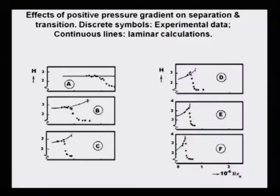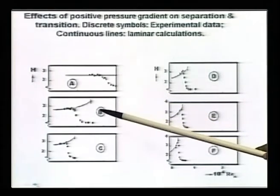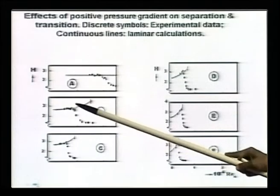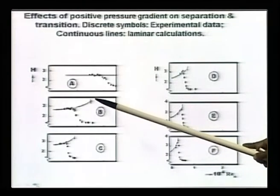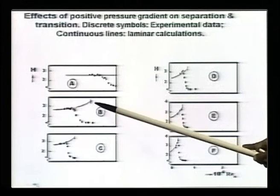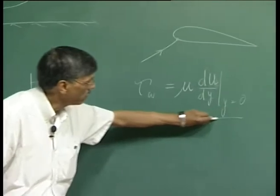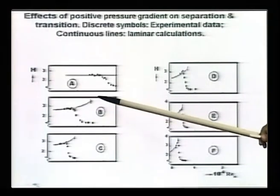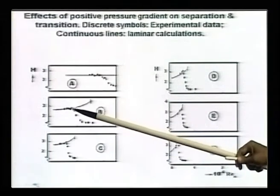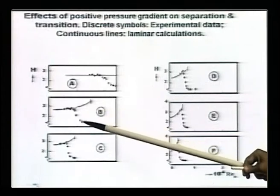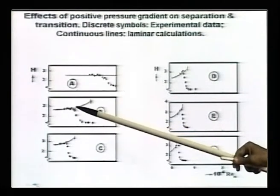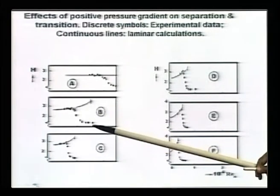That was your zero pressure gradient scenario. Now let us look at adverse pressure gradient. If you do a boundary layer calculation, because it is adverse pressure gradient, H increases as we indicated. After some distance you would have the separation criteria satisfied, so you would have a flow separation indicated by a vertical barrier, and your boundary layer calculation cannot go beyond this. What happens to the experimentally observed shape factor? You can see it falls off. While this is a theoretical laminar flow, actual flow undergoes transition earlier, and that is what you are noticing here.